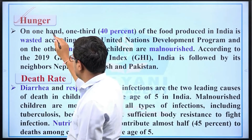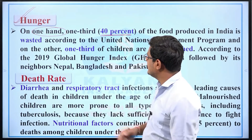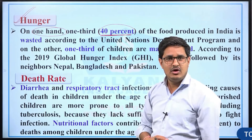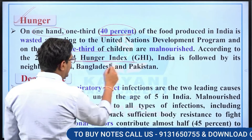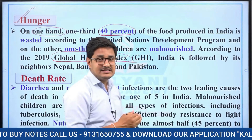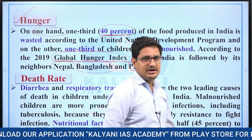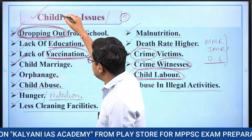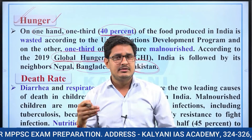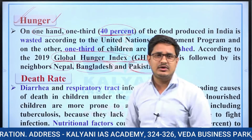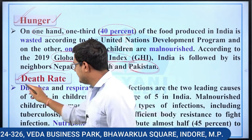Regarding hunger in India: on one hand, 40% of grain is wasted every year, and on the other hand, children in our country do not have enough food. According to the 2019 Global Hunger Index, India is behind its neighboring countries such as Nepal, Bangladesh, and Pakistan. The hunger problem in India is growing day by day. India is producing a huge amount of food grains, but the hunger problem is also increasing — meaning food is not reaching those who need it.